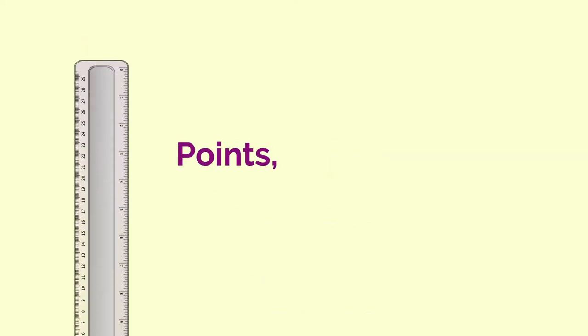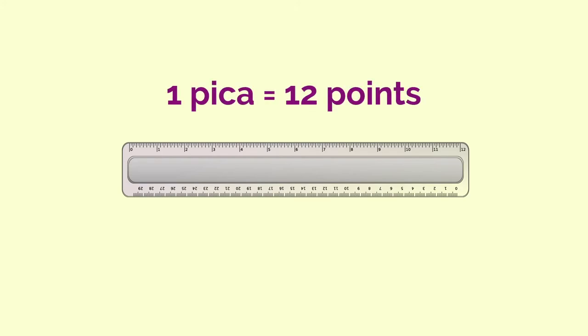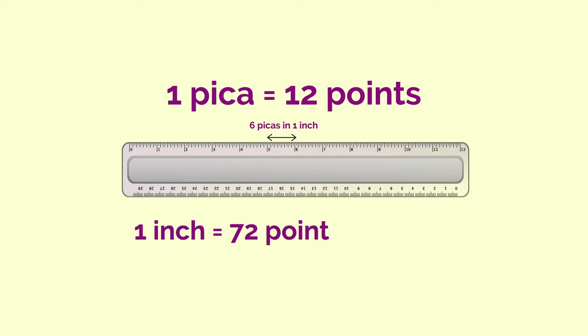Font sizes are usually measured in points, picas, inches, pixels, percentage, ems and rems. A pica contains 12 points and 6 picas form an inch. Therefore 1 inch is equal to 72 points or 6 picas.